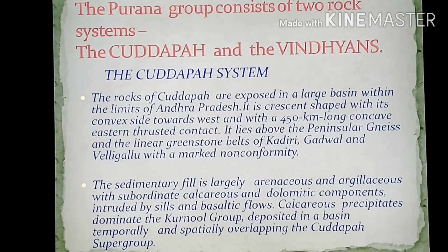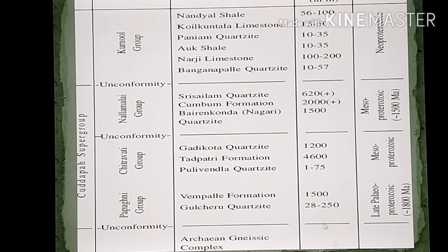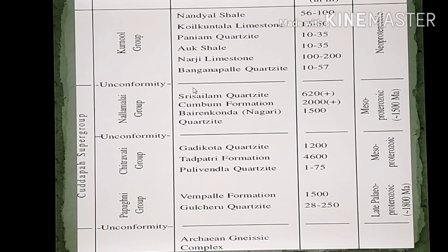Calcareous precipitates dominate the Kurnool group. The Kadappa group is overlaid by the Kurnool group, which is deposited in a basin temporally and spatially overlapping the Kadappa supergroup. The Kadappa supergroup is divided into the Papagani group, Chitravati — also known as Chedaya group — Nallamala group, and Kurnool group. These correspond to the formations of Papagani, Chitravati, Nallamala, and Kurnool. There is a prominent Eparchean or main unconformity overlying the Archean gneiss complex.